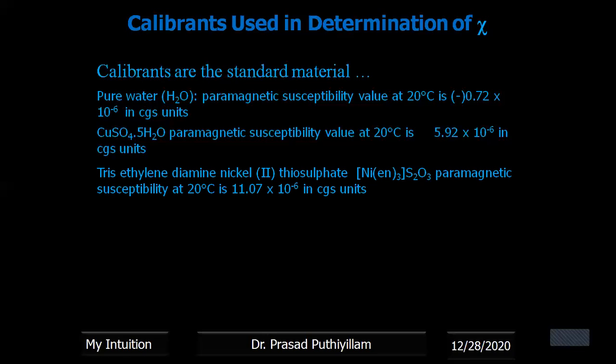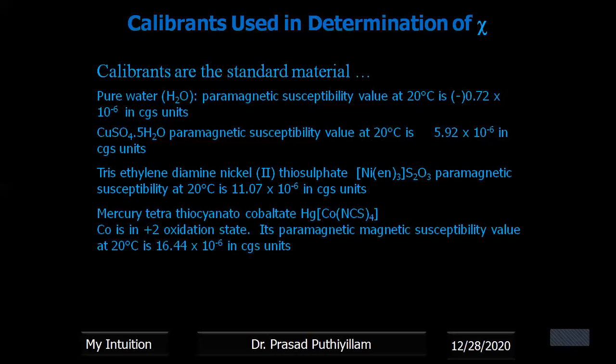This is one of the secondary standards as a calibrant in determining. But mercury tetrathiocyanatocobaltate, Hg[Co(NCS)₄], in which cobalt is in +2 oxidation state, its paramagnetic susceptibility value at 20 degrees Celsius is 16.44 × 10⁻⁶. So compared to the tetraethyl diamine nickel thiosulfate, this is a higher value, 16.44 × 10⁻⁶.